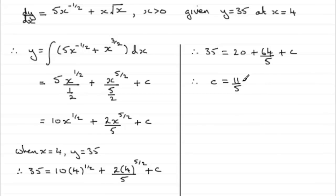Then I need to just substitute this back in to this equation to complete it, giving us y equals 10x to the power half plus 2x to the power 5 over 2, all divided by 5, and then plus c, plus 11 fifths. And there you go, it gives us y then.